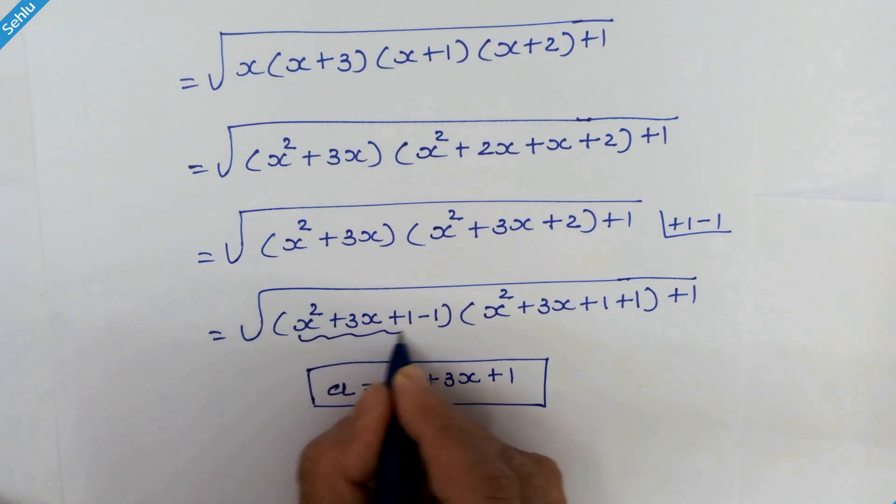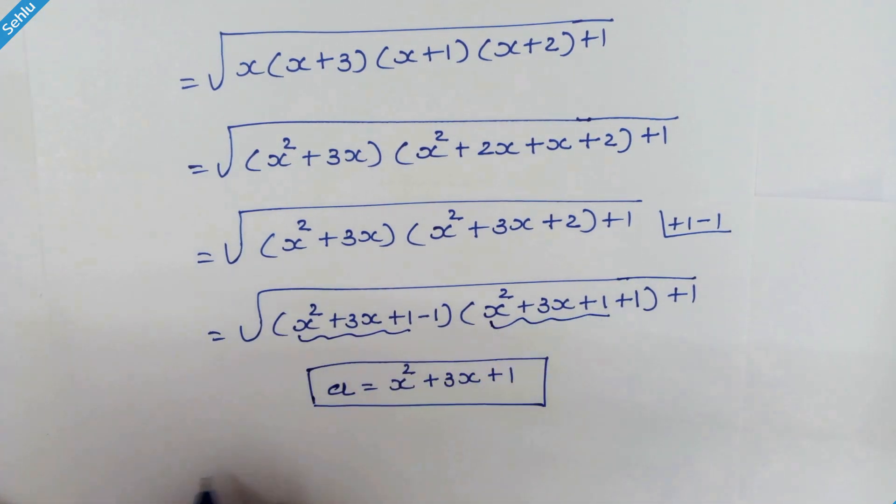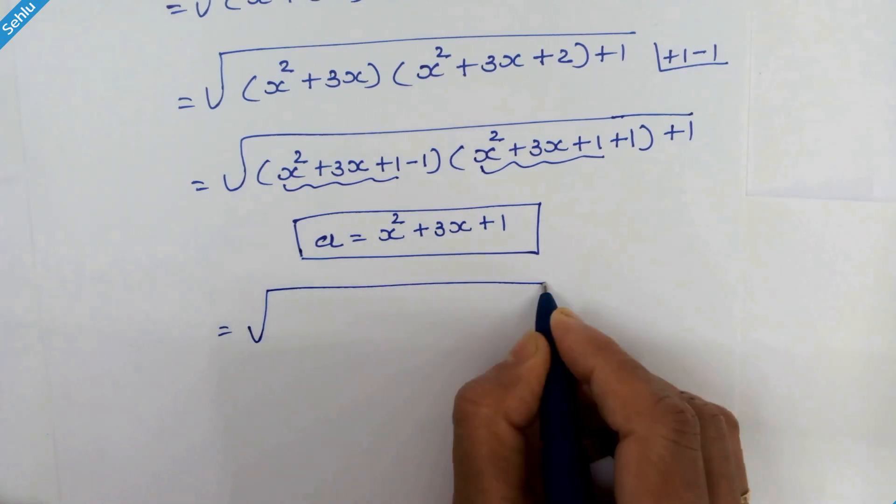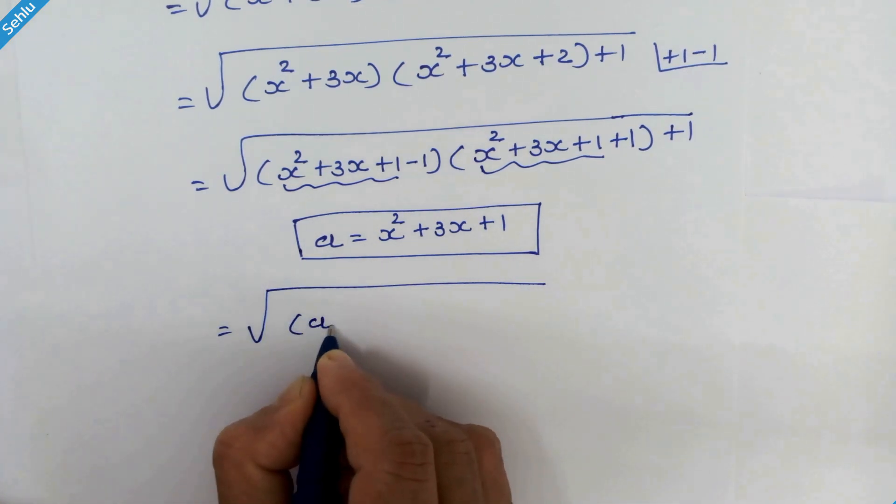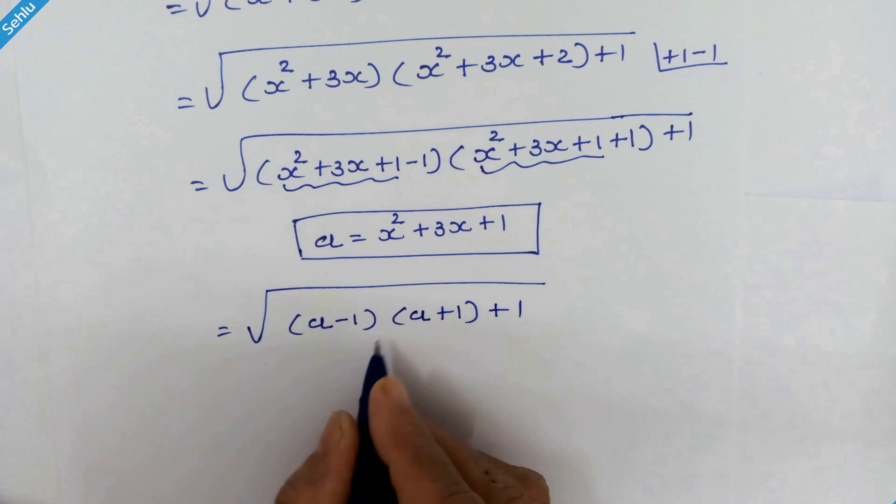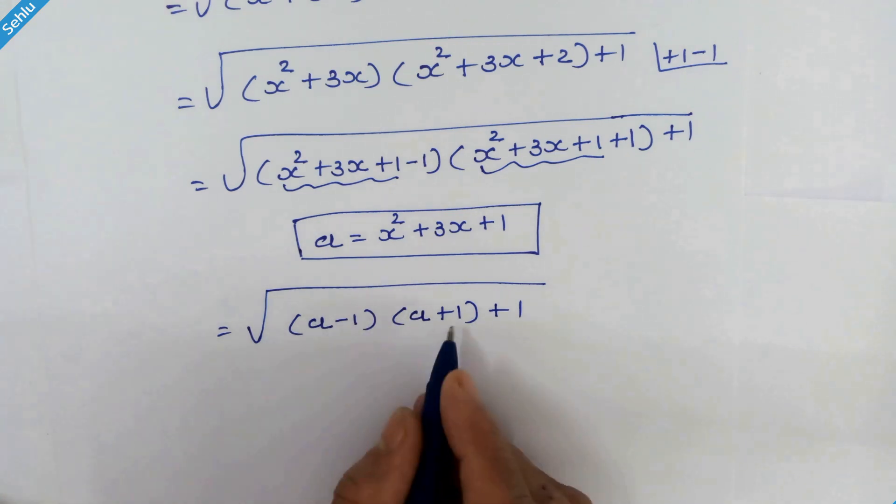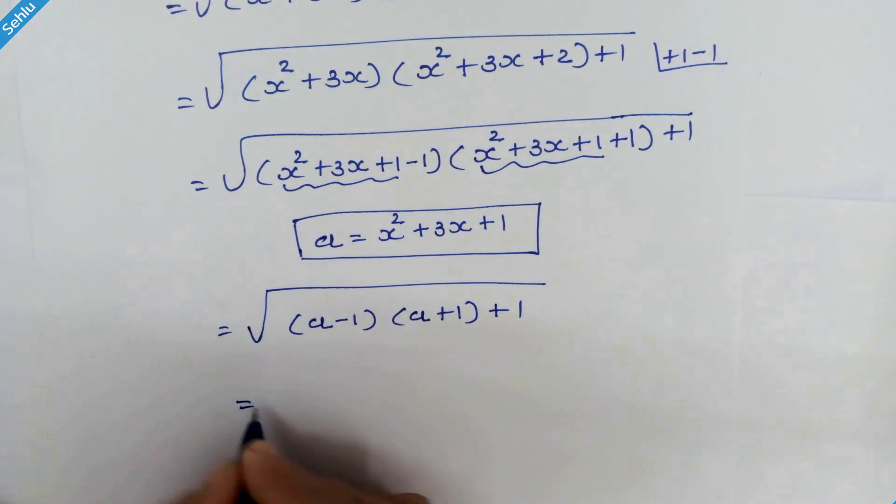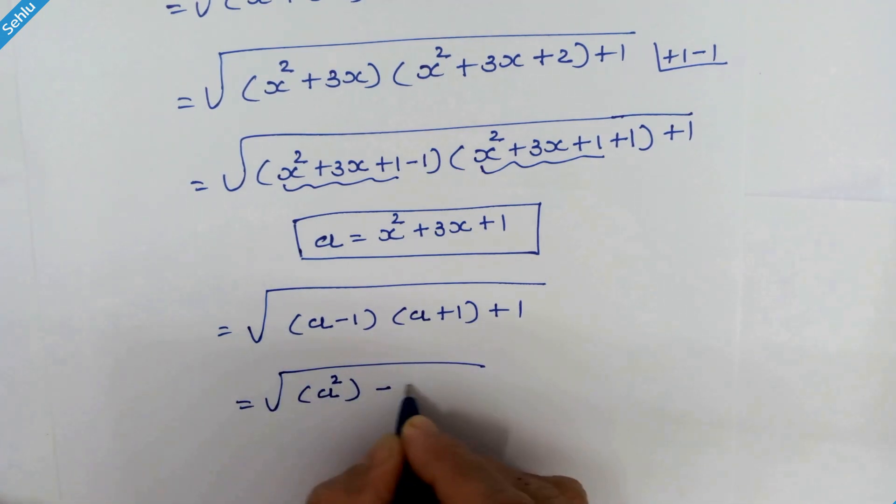So we have a minus 1, times a plus 1, plus 1. Now as you know, this is an identity. So we have square root of a squared minus 1 squared plus 1.